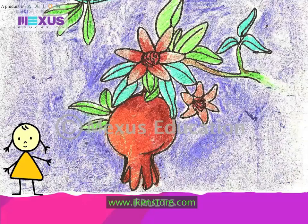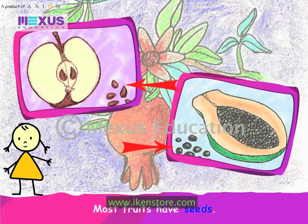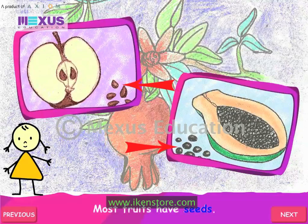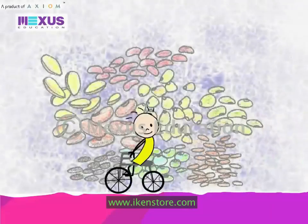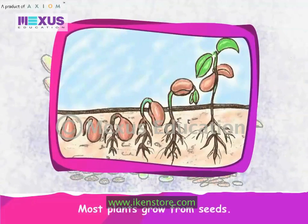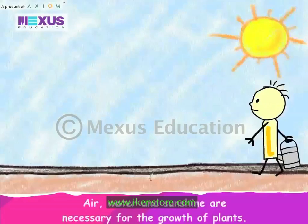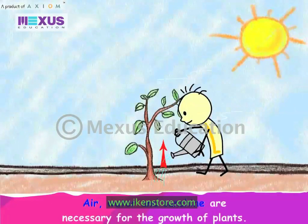Fruits. Some flowers grow into fruits. Most fruits have seeds. Seeds are of many kinds. Most plants grow from seeds. Seeds are sown in the soil. Air, water and sunshine are necessary for the growth of plants.